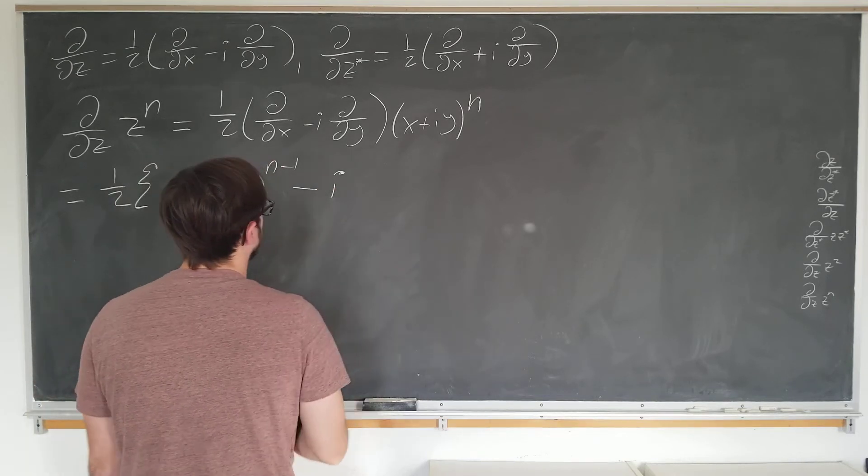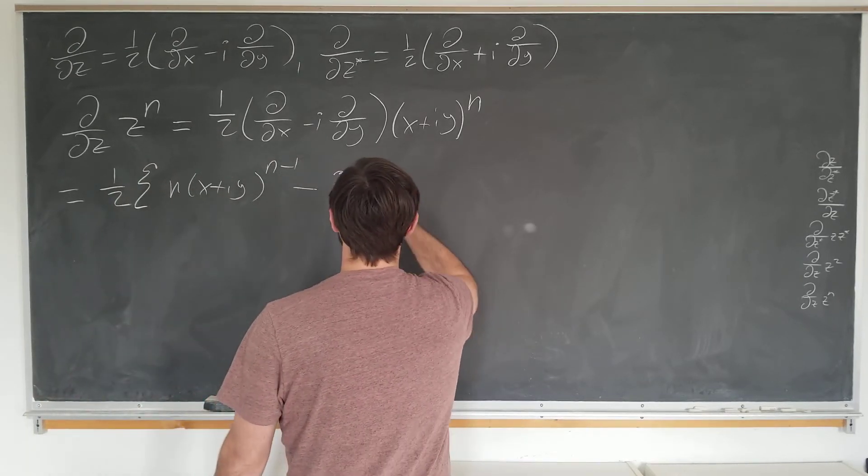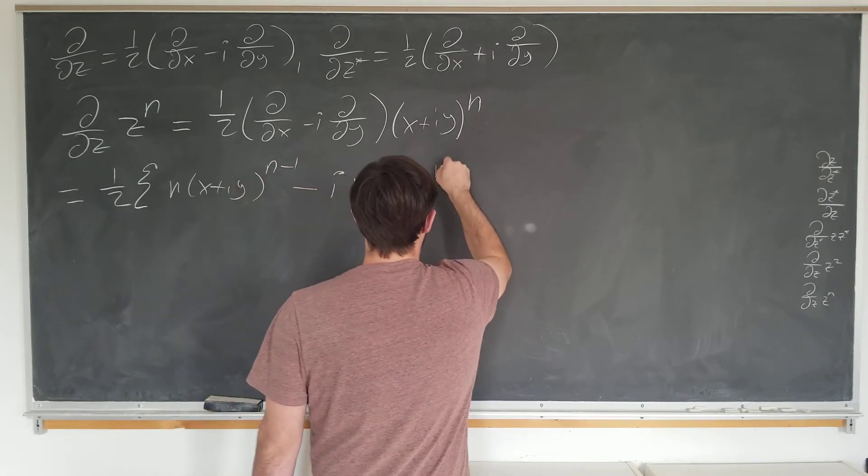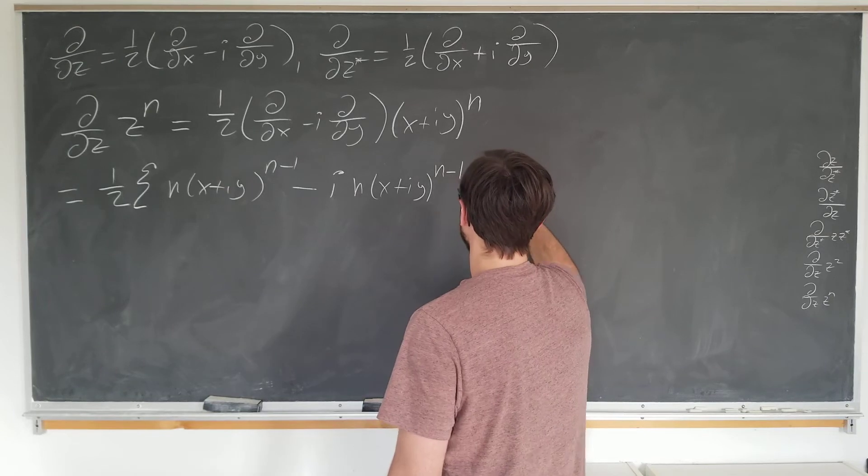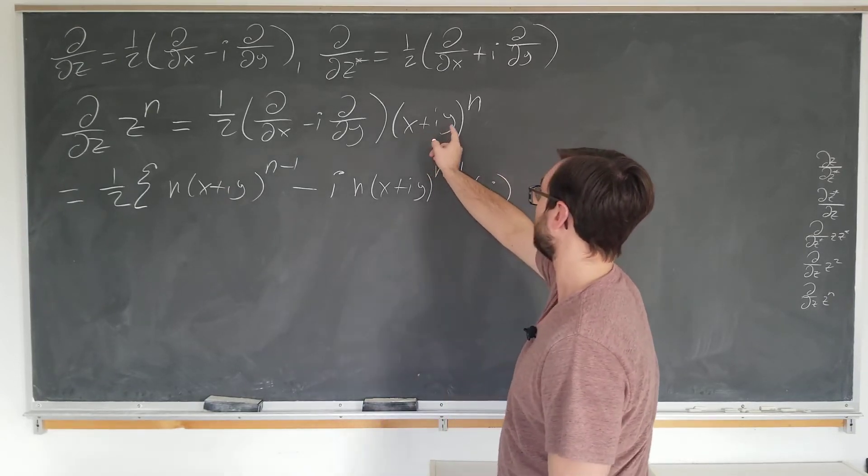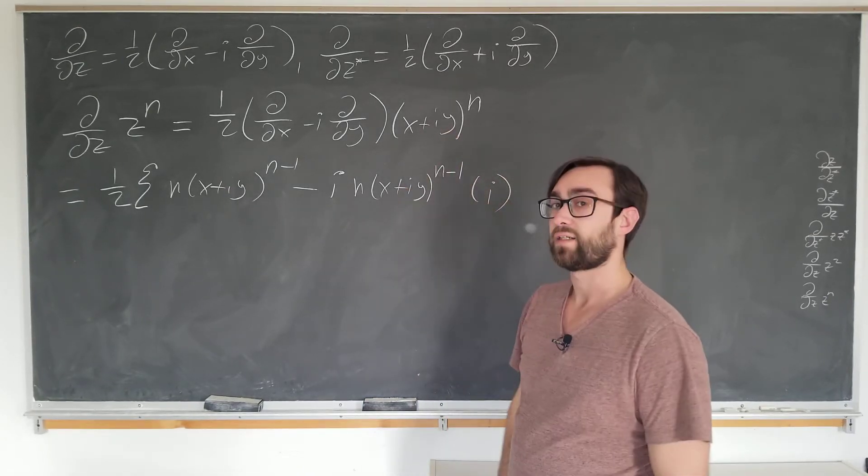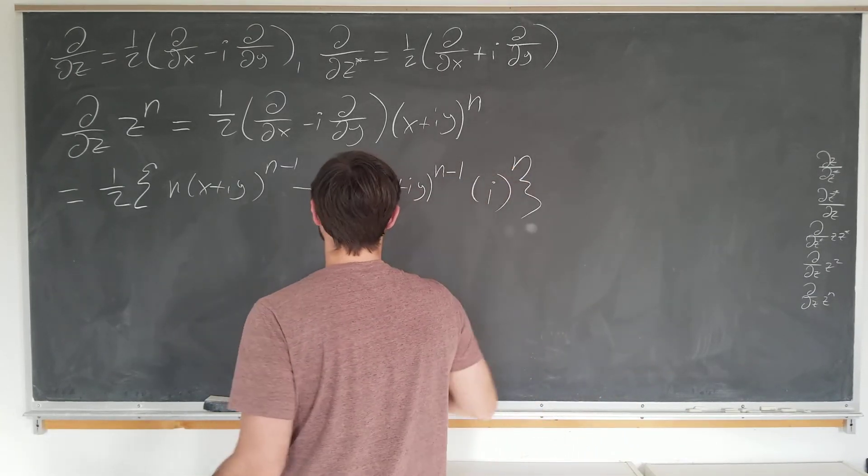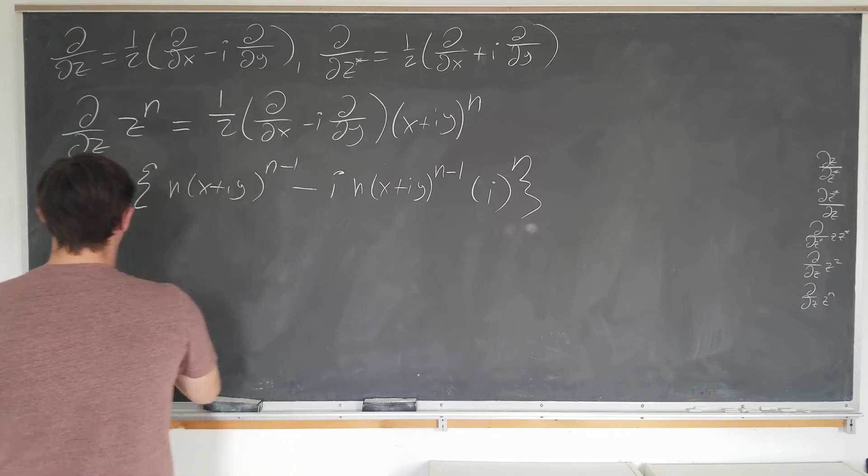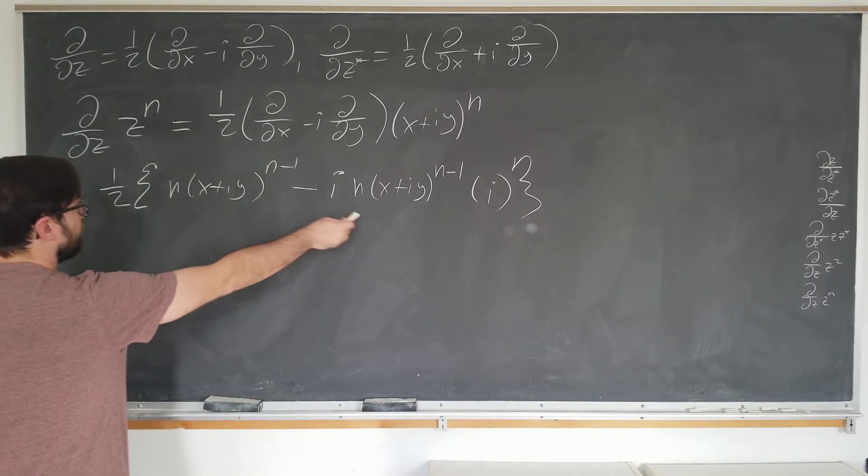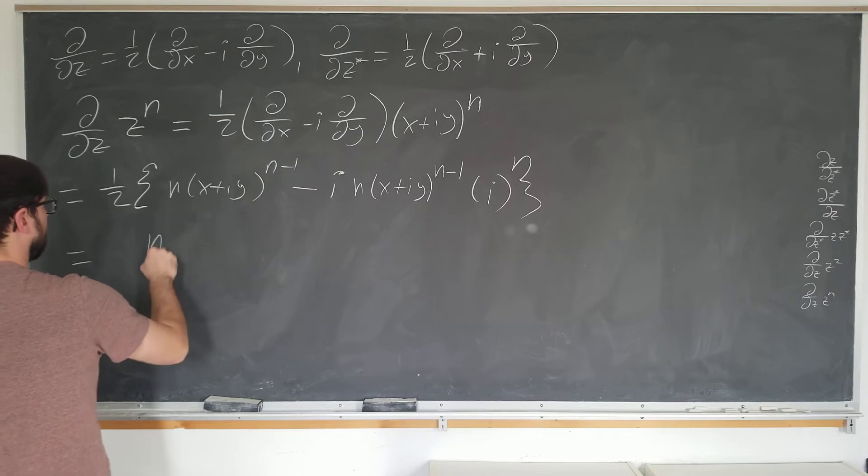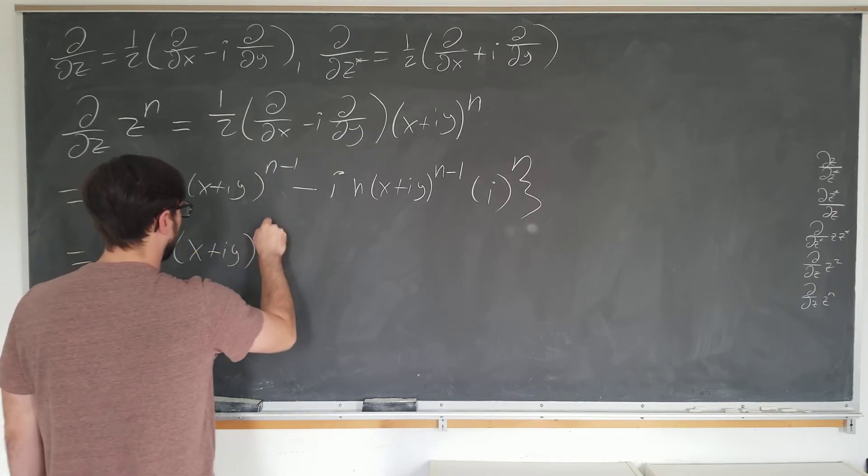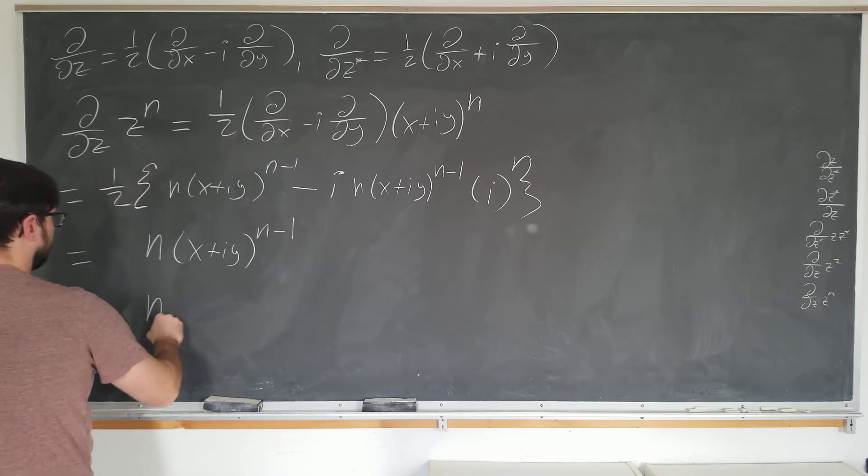If we do the minus i d by dy of this, it's just going to be n times x plus i y to the n minus one. Here we do need a factor of i, since the derivative of this with respect to y is actually i. We see that i squared is negative one. So it just becomes one half times two of this thing, which is simply n times x plus i y to the n minus one.